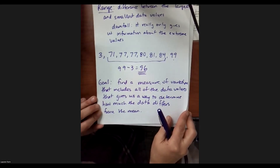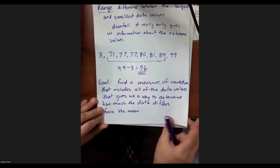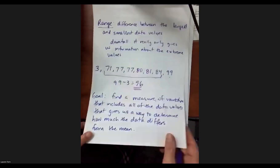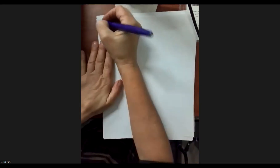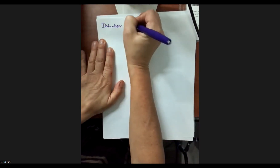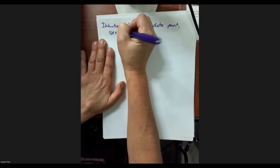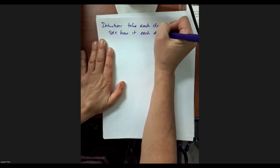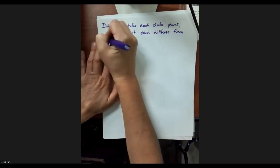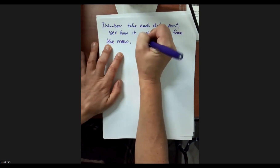You're not responsible for deriving this formula, nor are you responsible for ever really having to use it. But one intuition people tend to have is: why don't we take each data point, find out how much it differs from the mean, and then take the average of those differences?